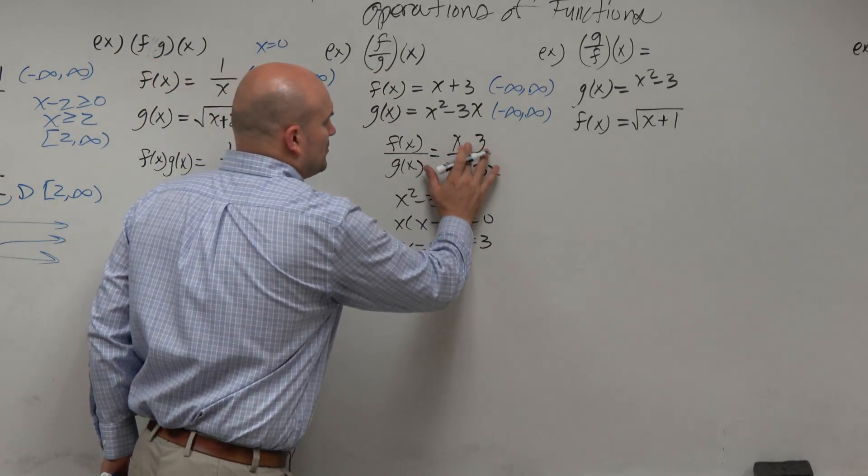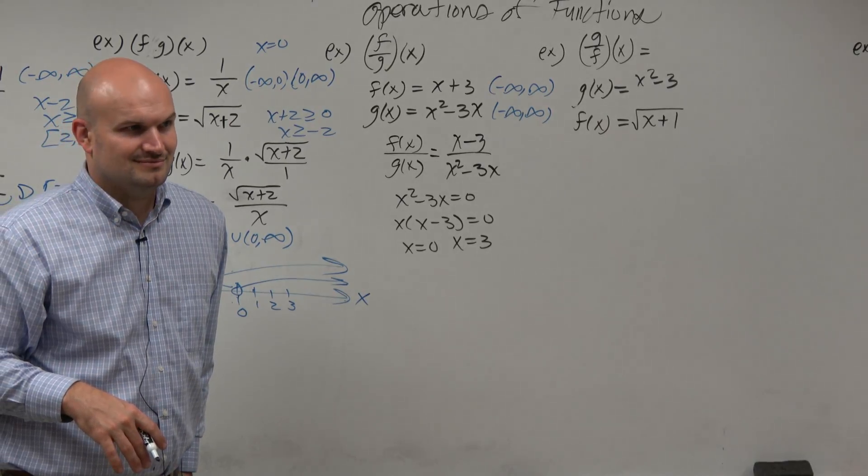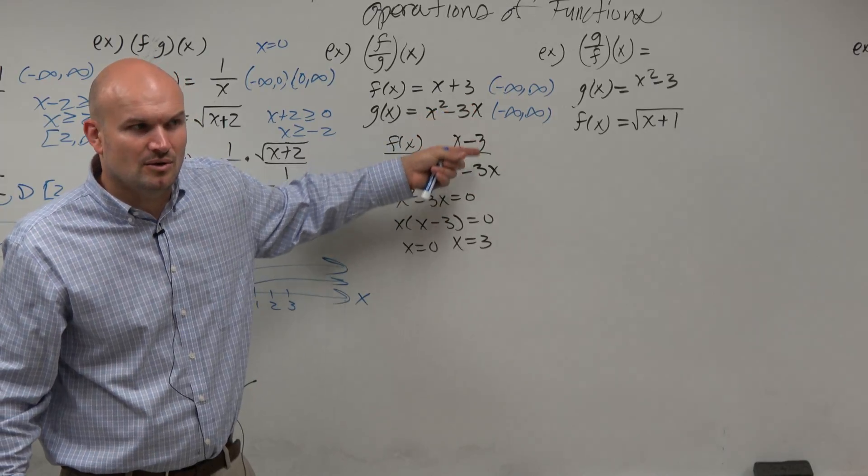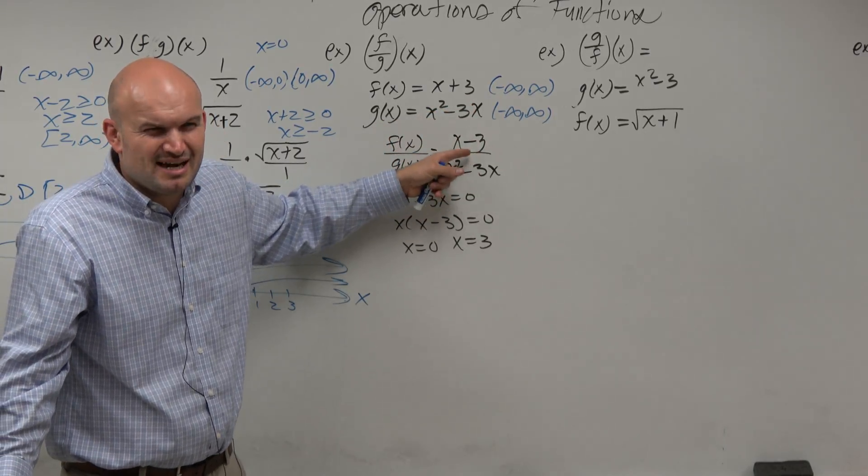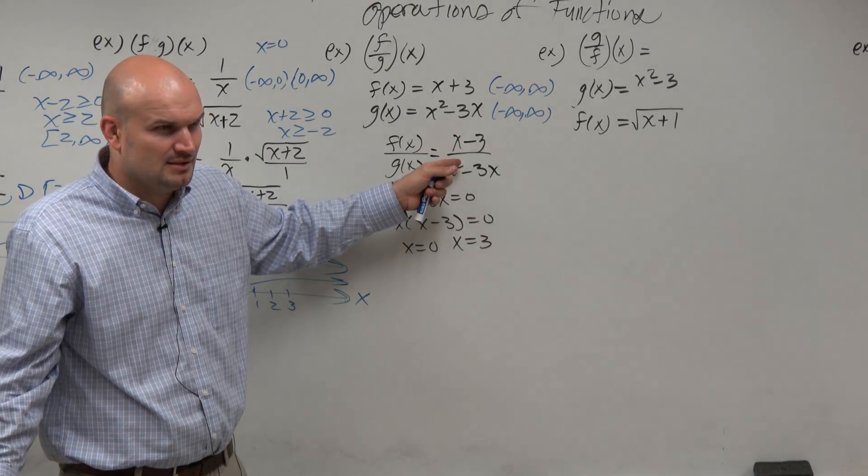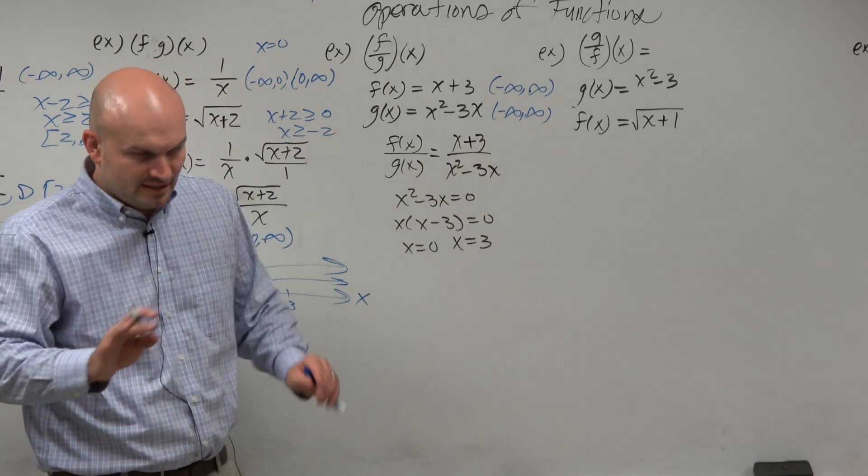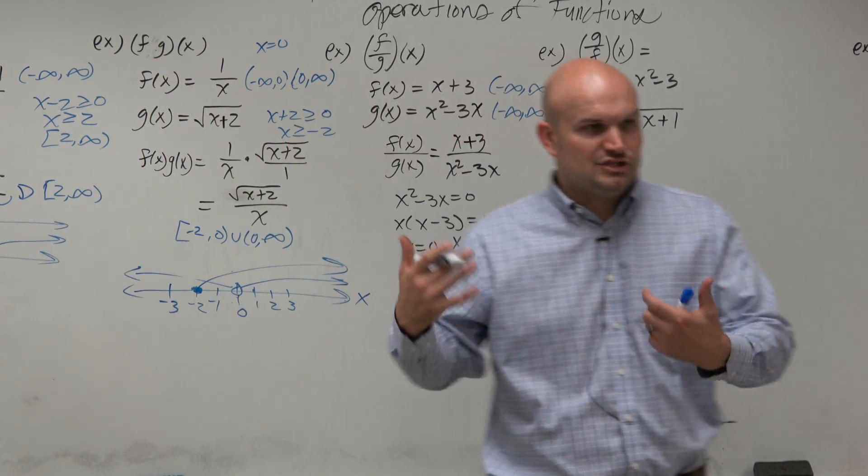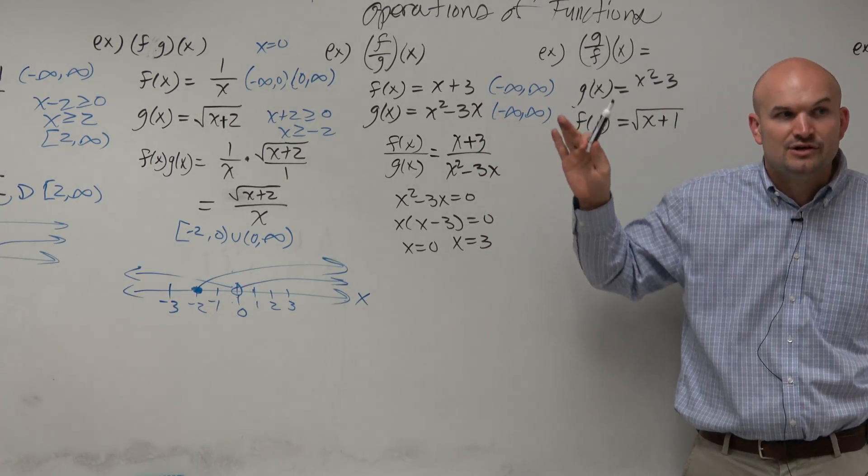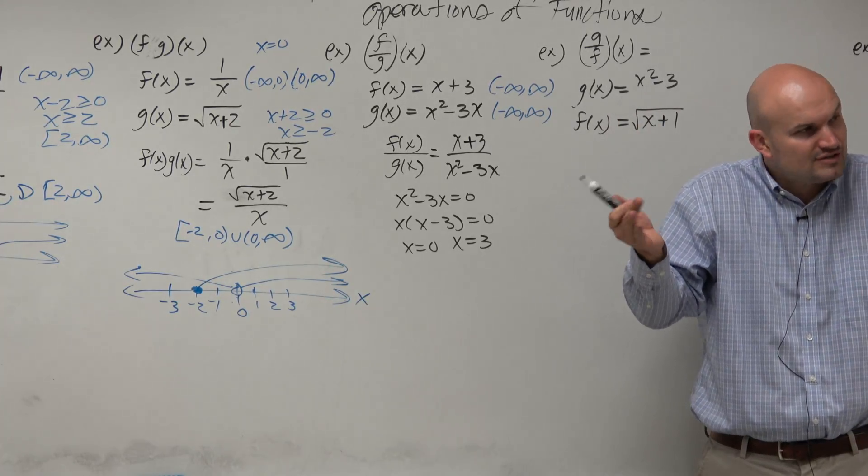Would it have mattered if these were both x minus 3's and that divided out? What would this be called when they divide out? That's called a movable hole, right? But does that affect the domain? Is it still part of the domain or not part of the domain? No, it's still a discontinuity. It doesn't matter if it's divided or not. I didn't choose that example because I didn't want to confuse you, but remember, holes are discontinuities. Just because they divide out doesn't mean they don't exist. They're still holes.